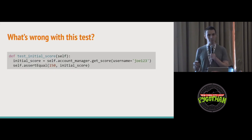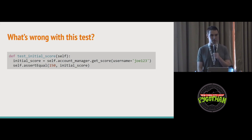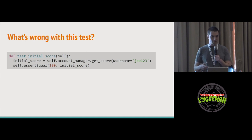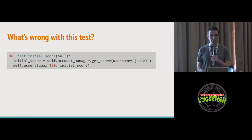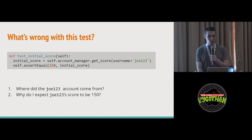This is a common pattern of unit tests that I see. We've got this test for a function called getScore, we've got this account manager instance, and we're calling the getScore method. We're calling getScore for Joe123, and Joe123's score is 150. If you read this test, the thing that should jump out to you is: where did Joe123 come from? And why is Joe123's score 150?